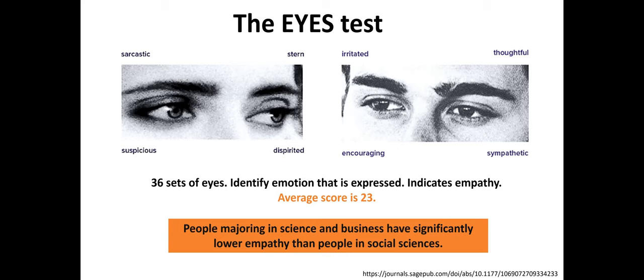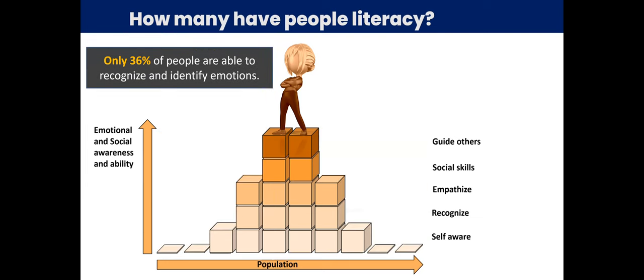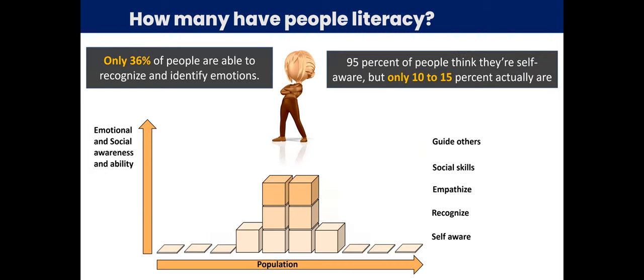What is interesting is that again, with the finger pointing, they are happy to identify that people majoring in science and business have significantly lower people literacy than those in social sciences. So while the computer science and data folks are pointing fingers at sales and HR, HR is on the other side pointing fingers at science and business people. So how many of us have people literacy? Well, only 36% of people in general are able to recognize and identify and name emotions at a high level. And 95% of people think that they're self-aware, but only somewhere between 10 and 15% actually are. So people literacy is also lacking in a lot of ways.